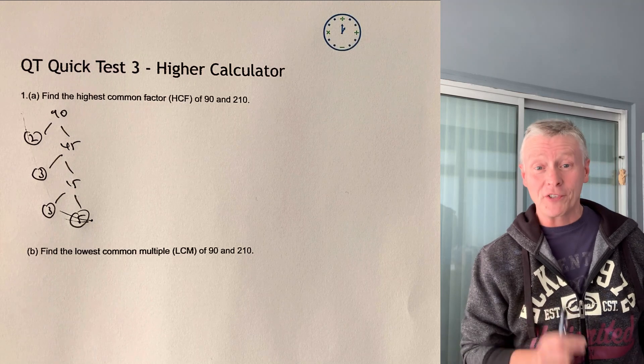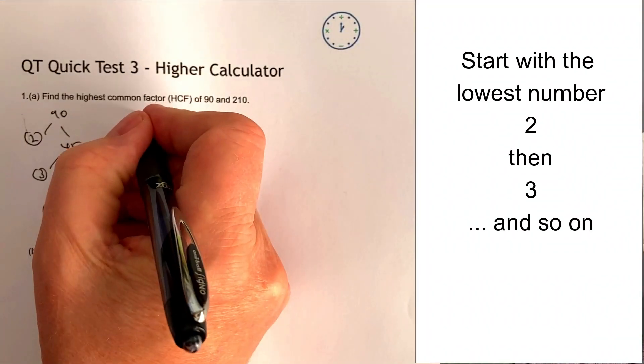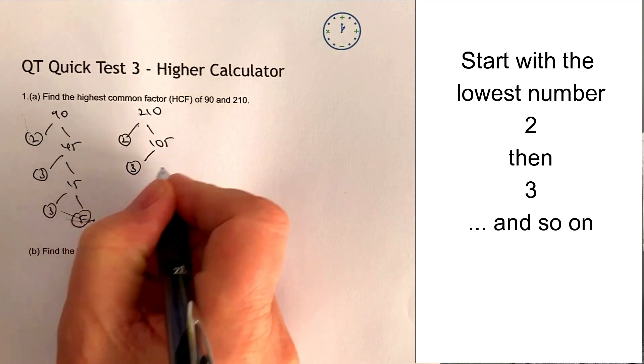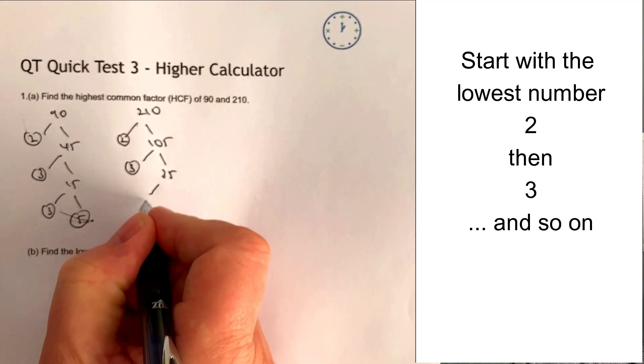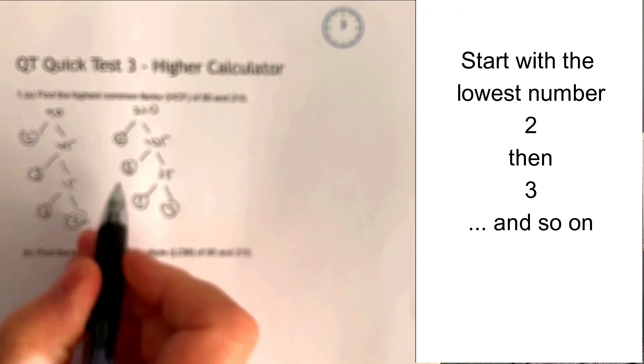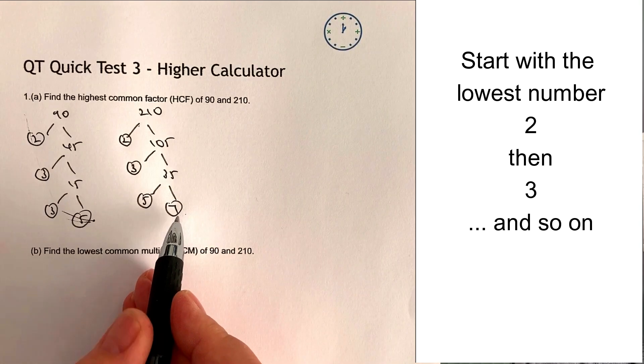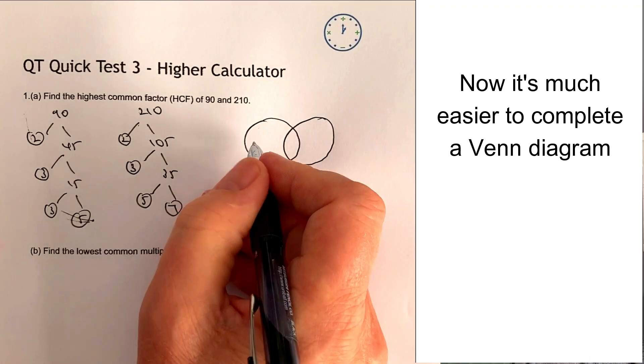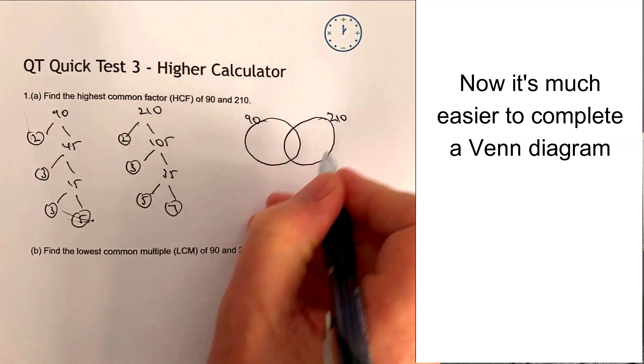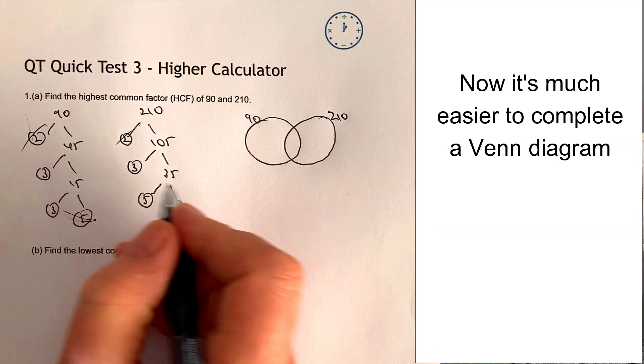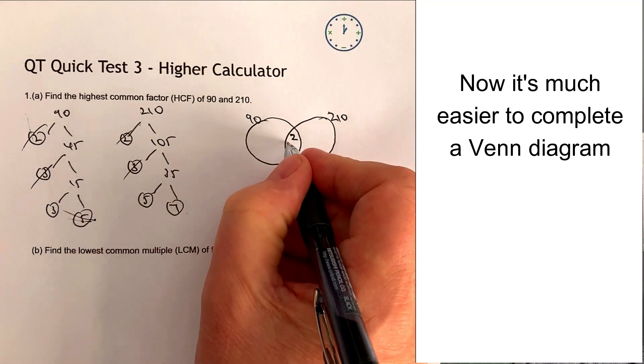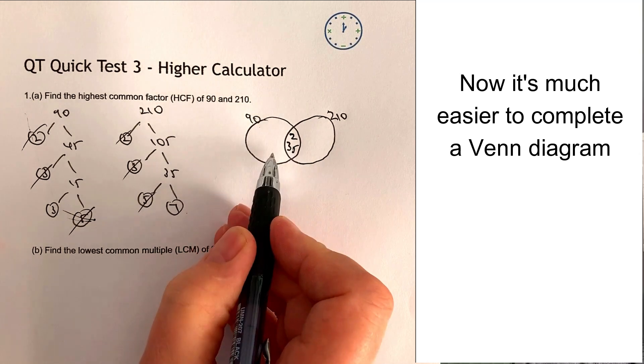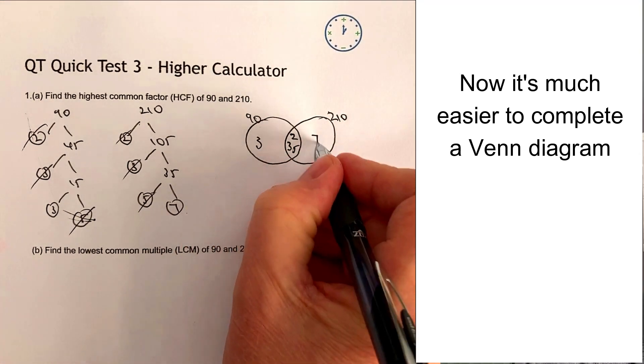Let's have a look at doing the same process with 210, which is the other number. So 210 then, I'm going to divide through by two, which means I get 105. I know that's divisible by three and that's going to be 35. I know that's divisible by five and then also by seven. You'll see the numbers are ascending and also they're set out in such a way that when I put this then into a Venn diagram, which is an extremely helpful way to look at these sorts of collections of numbers.